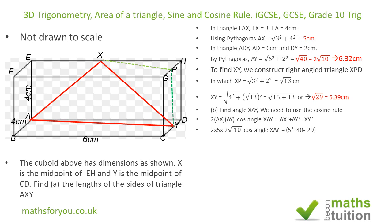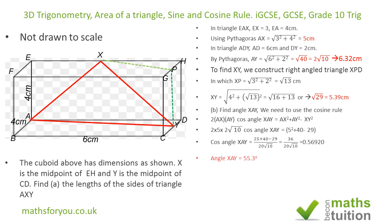Putting in the numbers: 2 times 5 (since AX is 5) times 2 root 10 (since AY is 2 root 10) times cosine of angle XAY. When we rearrange, the cosine of angle XAY equals 0.5692. Pressing shift then the cosine button on the calculator, we get angle XAY equal to 55.3 degrees.